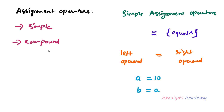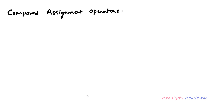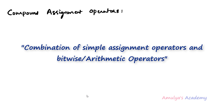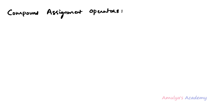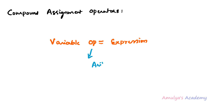Next we will talk about compound assignment operators. We can use the simple assignment operator with other operators, such as arithmetic operators or bitwise operators. When we combine the simple assignment operator with those other operators, that is called a compound assignment operator. The general syntax is: variable, operator, assignment operator, then expression. Here the expression can be a value or a variable.